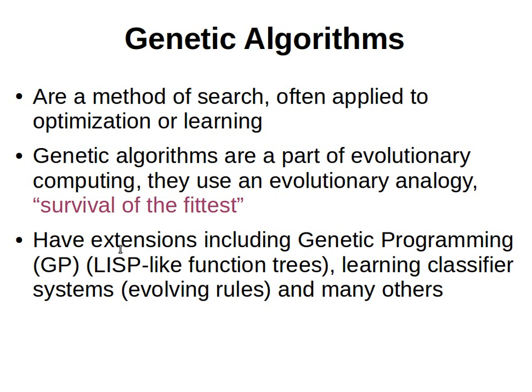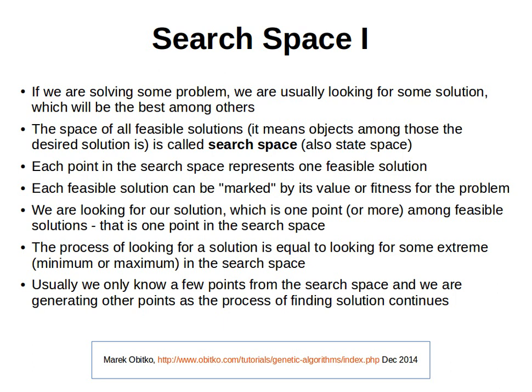Genetic algorithms have several extensions, including various examples. Now, solving a problem via search — if we're solving a problem then we're looking for a solution. This solution can be one of several possible solutions, and the one we want is the best amongst those possible solutions, and hopefully the actual real solution that solves the problem.